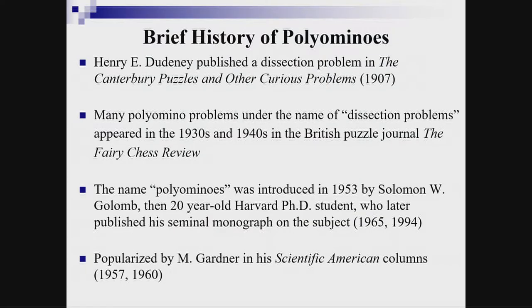A brief history of polyominoes: Dudeney published a dissection problem in the Canterbury Puzzles in 1907. Many polyomino problems under the name of dissection problems appeared in the 1930s and 1940s in the British puzzle journal the Fairy Chess Review. The name 'polyominoes' was introduced in 1953 by Golomb himself, then a 20-year-old Harvard PhD student, who later published his seminal monograph on the subject.